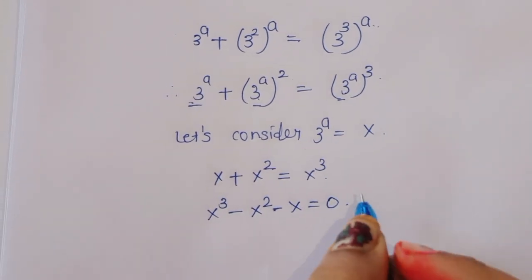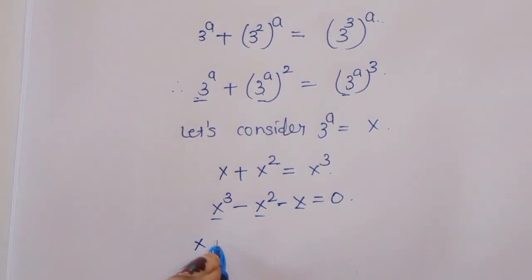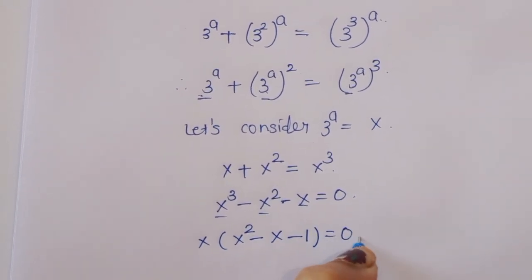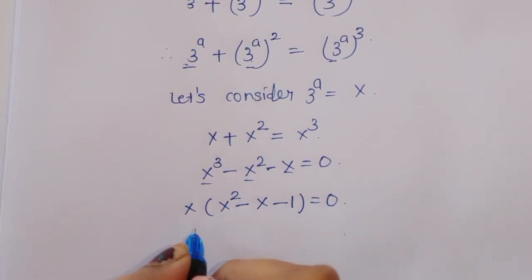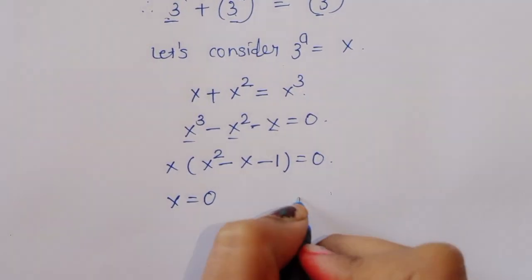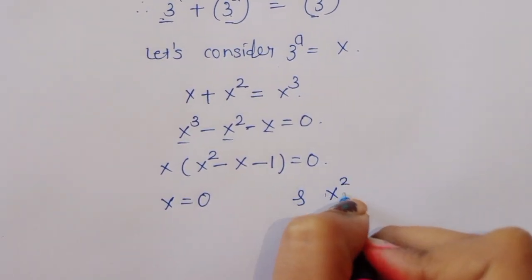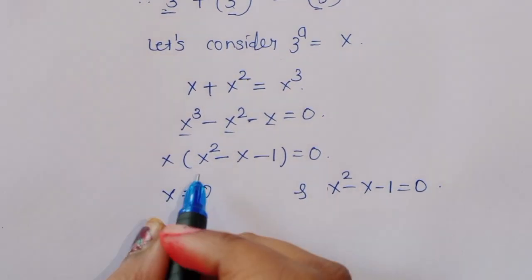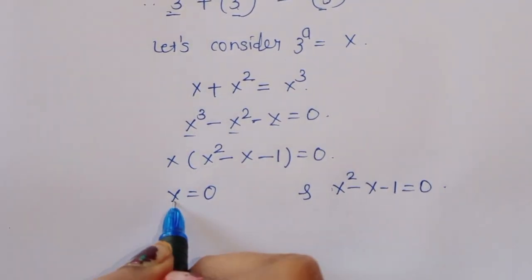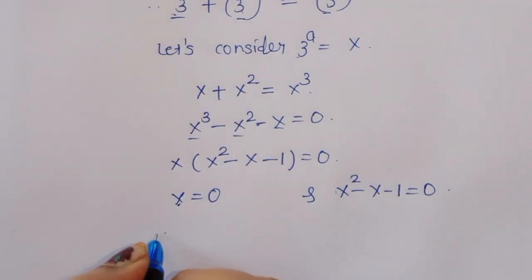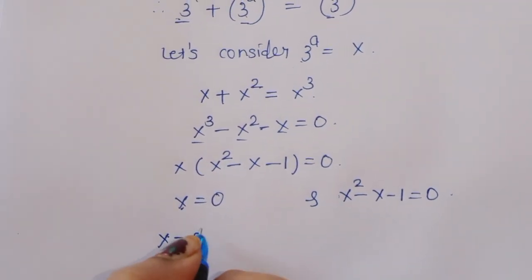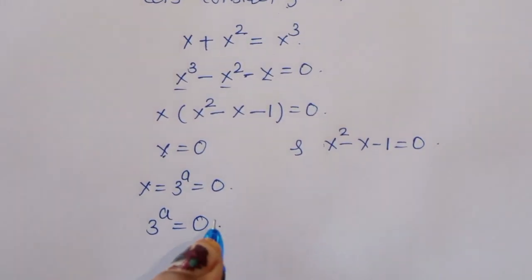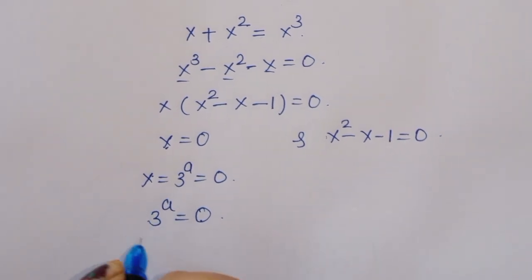Taking 3 power a as common, we get x times bracket 1 plus x minus x squared equals 0, giving x squared minus x minus 1 equal to 0. We also get the solution x equal to 0. But since x is equal to 3 power a, 3 power a equal to 0 is not possible, so this is rejected.